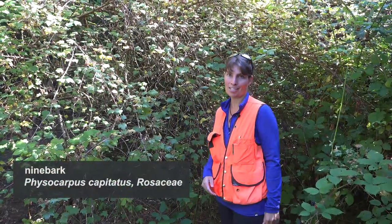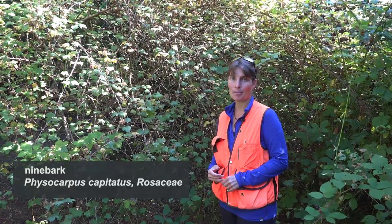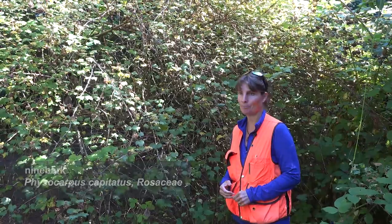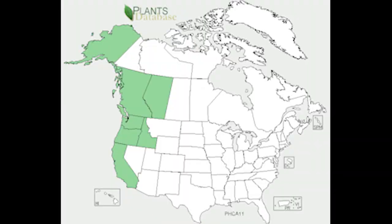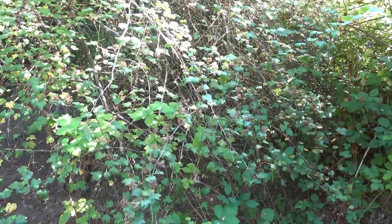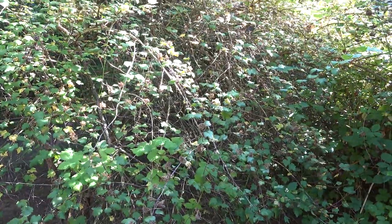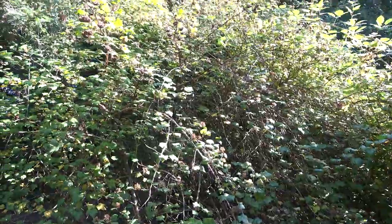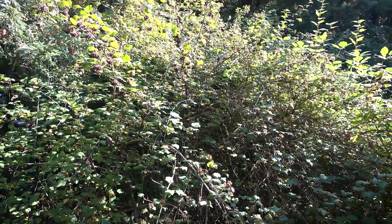Here we have our Physocarpus capitatus, commonly known as Pacific ninebark in the Rosaceae family. This species ranges from British Columbia and Alaska south into central California, and then east to Montana and down into Nevada. It generally prefers moist, well-drained sites, especially likes wetland environments, but can actually tolerate drought, which also makes it pretty popular as an ornamental species in some gardens.